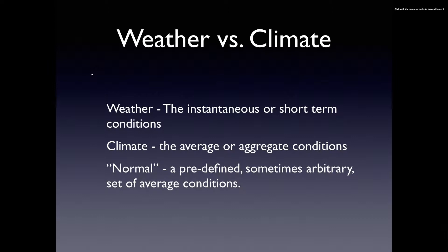That predefined set of conditions usually changes depending on what we're talking about. For example, if we say that the average temperature of the summertime is 80 degrees, then we can compare our weather conditions. If it happens to be 90 degrees, we know we're slightly warmer than average.